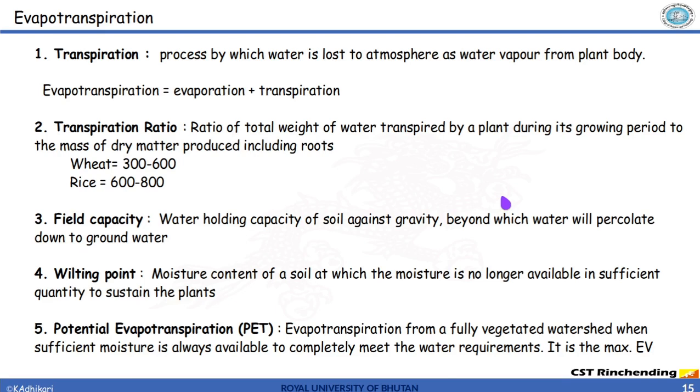Now, evapotranspiration is also known as consumptive use as this amount is necessary to sustain plant growth. We know that evapotranspiration is a combination of two terms, evaporation and transpiration. When we say evaporation, it means evaporation from the soil and transpiration is the actual water that is released by the plant.